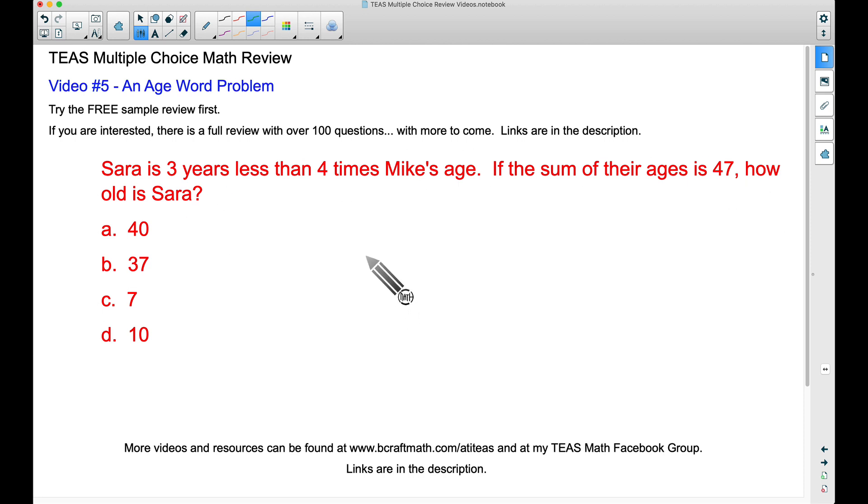Our goal is to figure out how old Sarah is. The sum of their ages is a good starting point. We have Sarah and Mike. I'm going to let S represent Sarah's age and M represent Mike's age. We're going to add those ages together and that sum is 47. Therefore, Sarah's age plus Mike's age equals 47 years: S + M = 47.